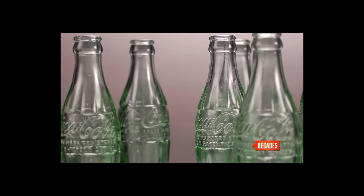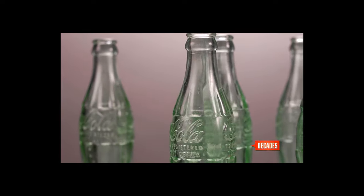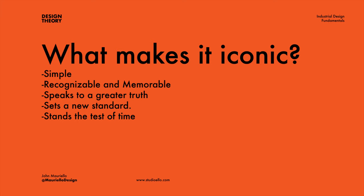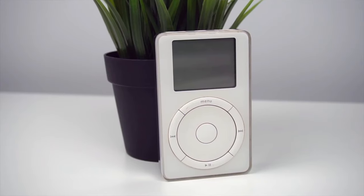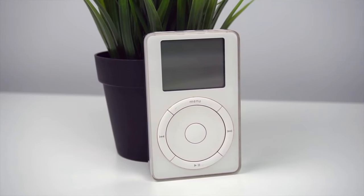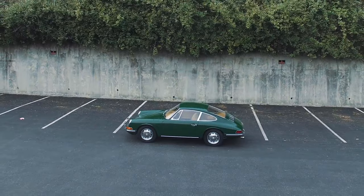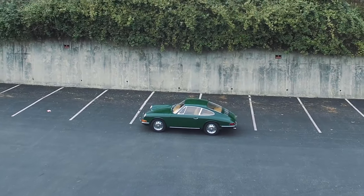This video focuses on how to use silhouette and proportion to make your designs distinctive. This is part two of the iconic design series — part one covered what makes a design iconic, linked in the description. Basically, an iconic design is simple, recognizable, and sets a new standard. Most importantly, it stands the test of time — think the 1957 Coke bottle, the Porsche 911, or the iPod. While very few products reach that level of icon, these tips will help get you closer, and at the least make your design more distinctive and recognizable.